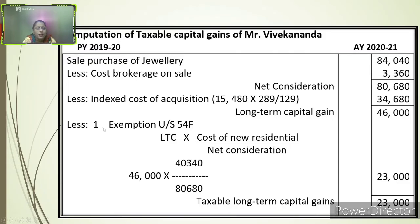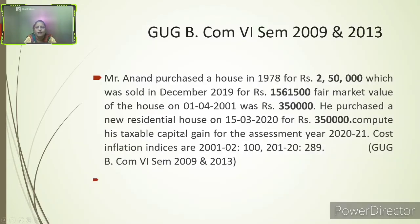Less exemption under Section 54F = LTCG × (Cost of new residential house ÷ Net consideration) = 46,000 × 40,340 ÷ 80,680 = rupees 23,000. Deducting this gives taxable long-term capital gain = rupees 23,000. This is how we calculate the LTCG. I will discuss the exemption in more detail in my next class.